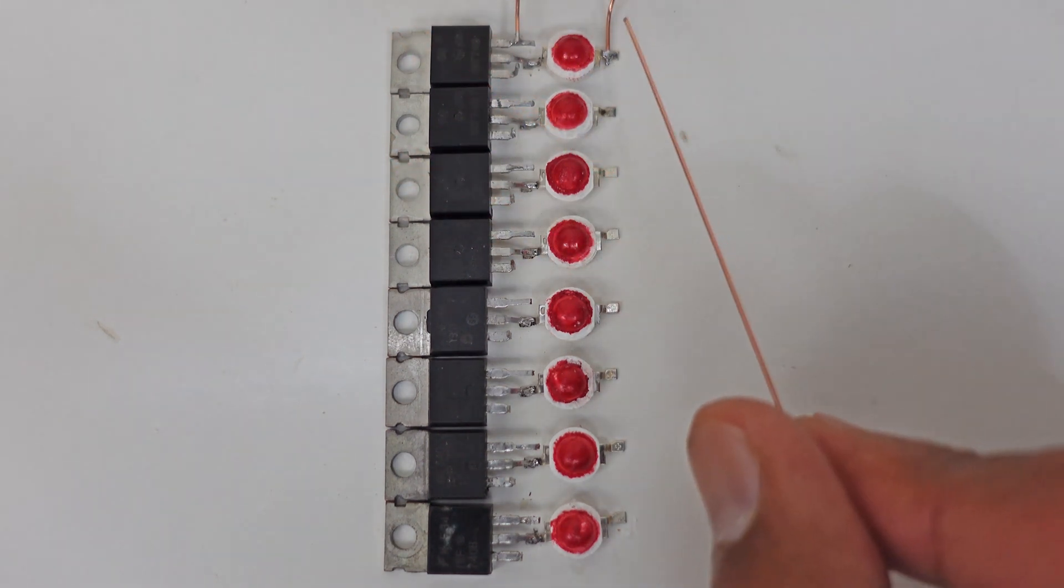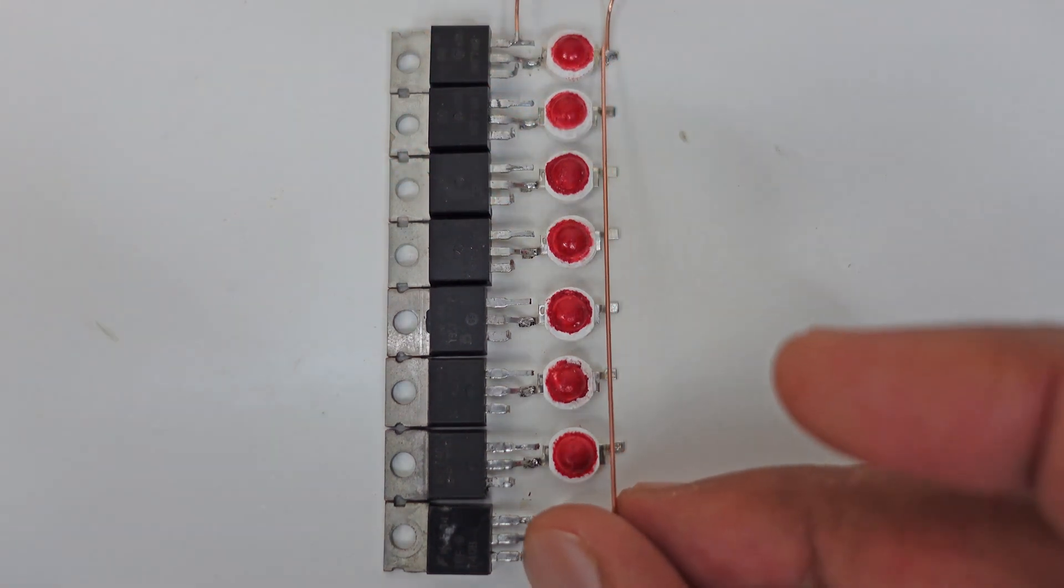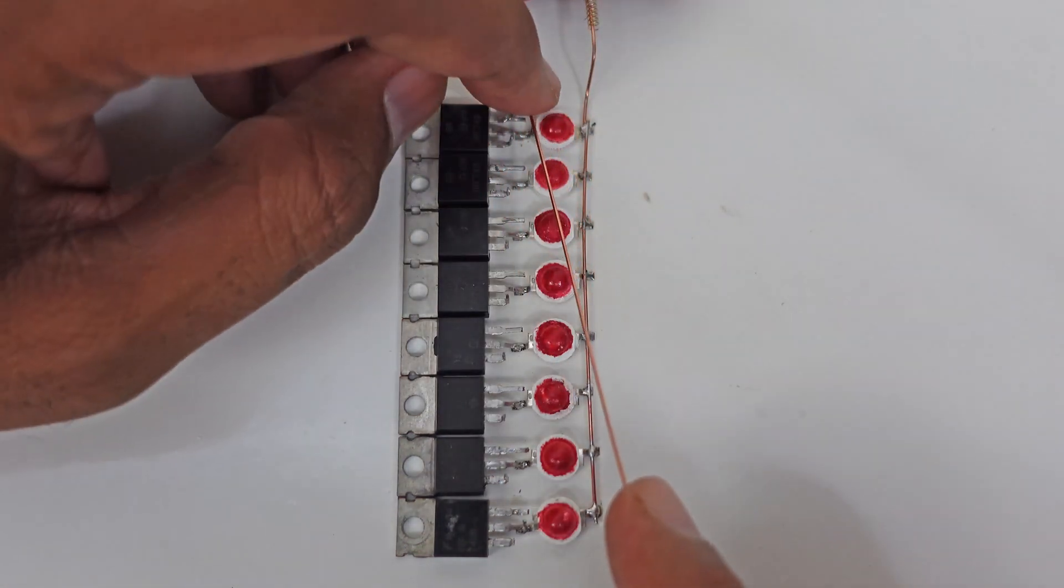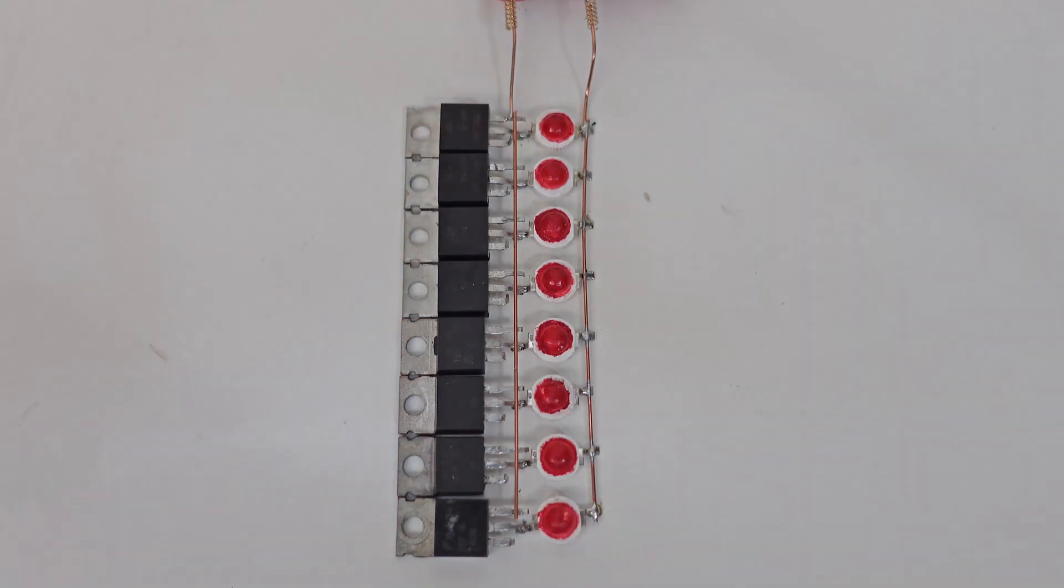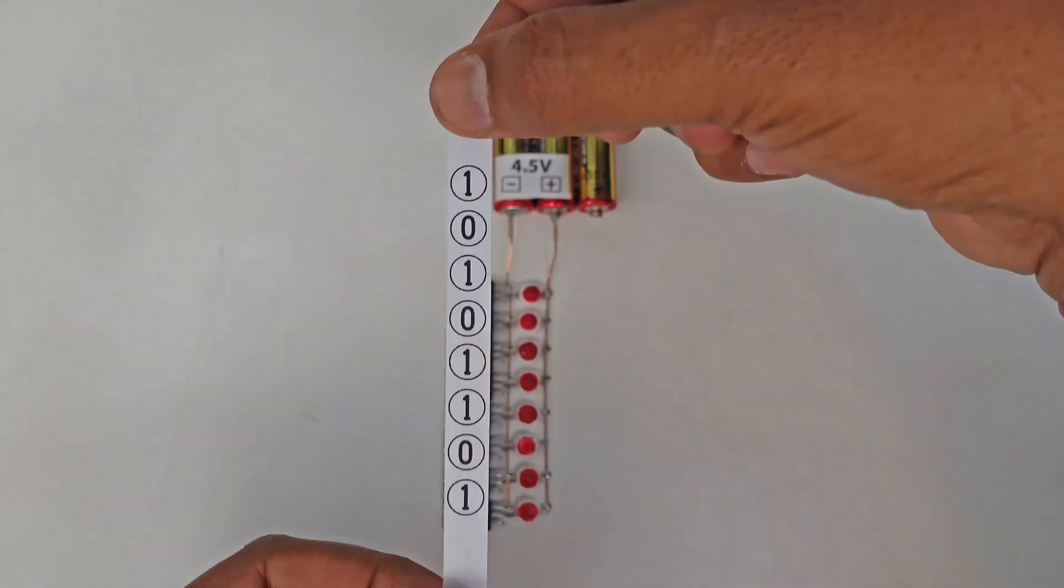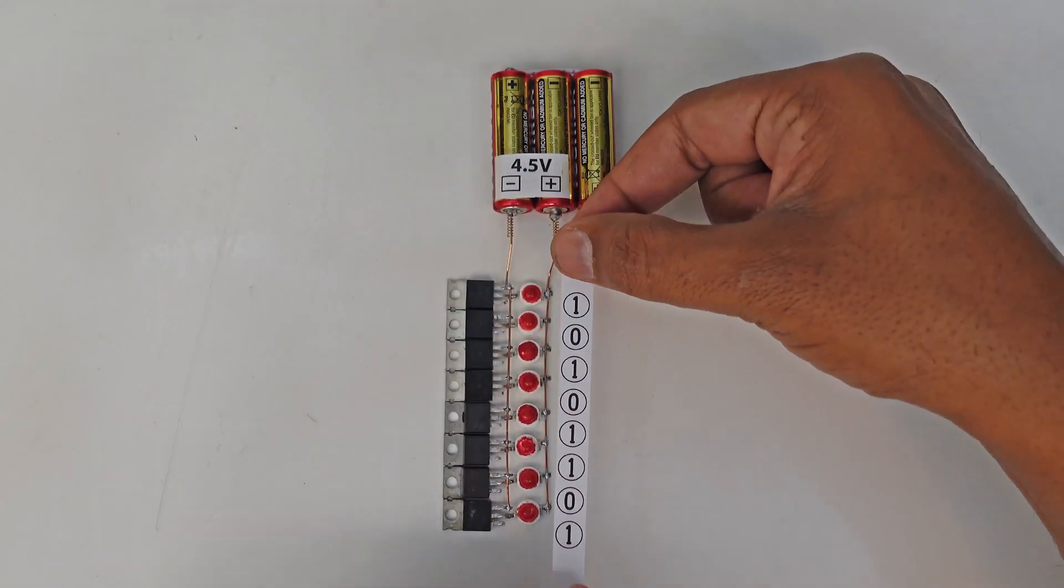Now we connect all the LED lights with the battery from the positive side and connect all the MOSFETs to the battery from the negative side as well. Our one byte memory is ready to store data. This is our one byte data. Let's store it in our flash memory.